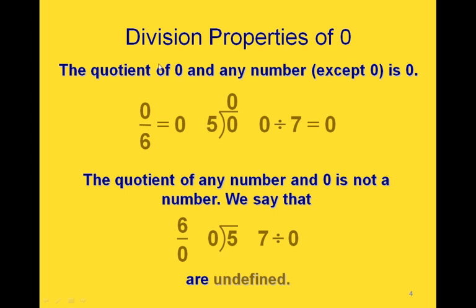The reverse of that is if we have the quotient of a number and 0 — if we're dividing by 0, we get something that's undefined. Notice the difference: in these problems we're taking 6, 5, and 7 and trying to divide each by 0 — that's undefined. In the earlier ones, we had 0 as our dividend and another number as our divisor.